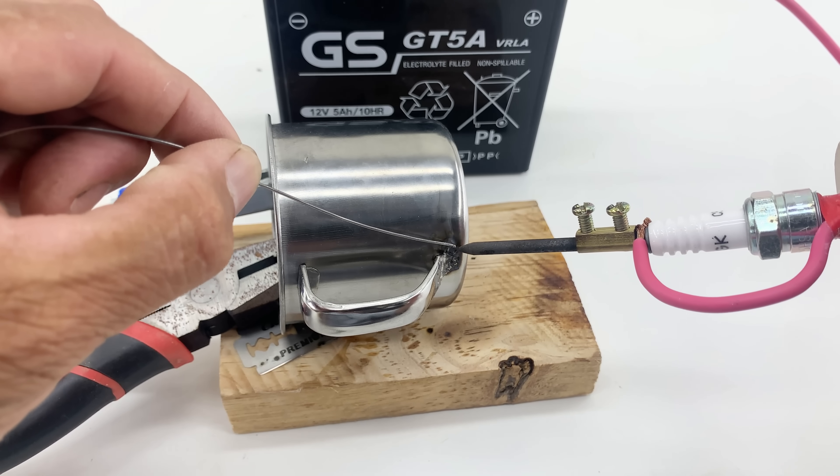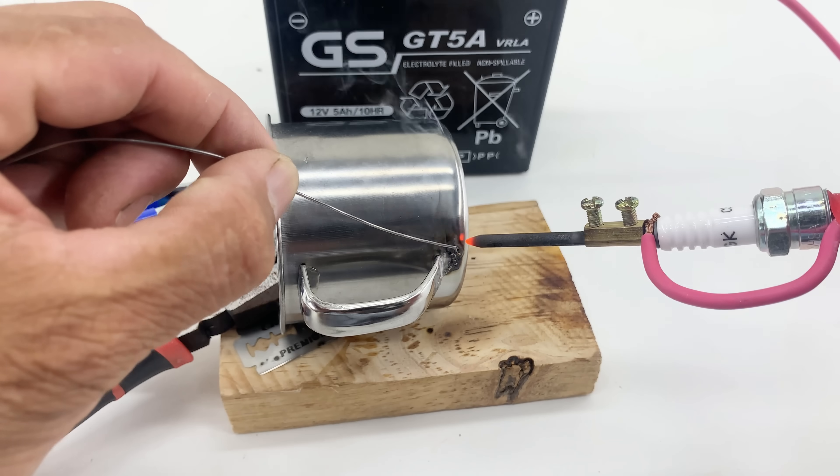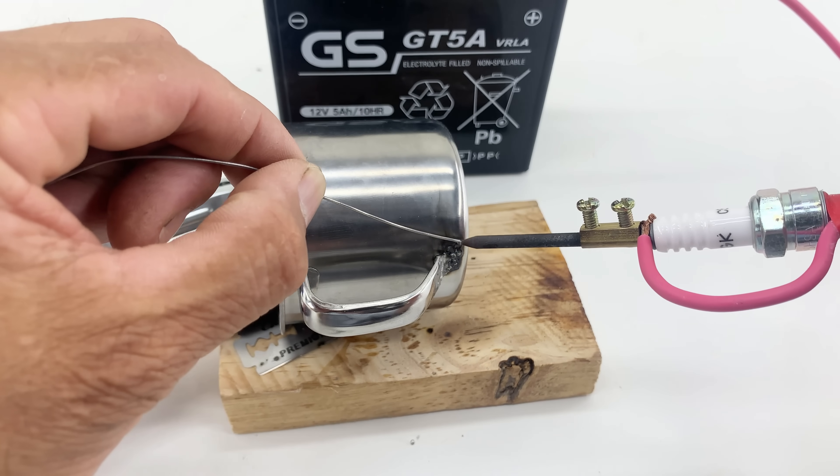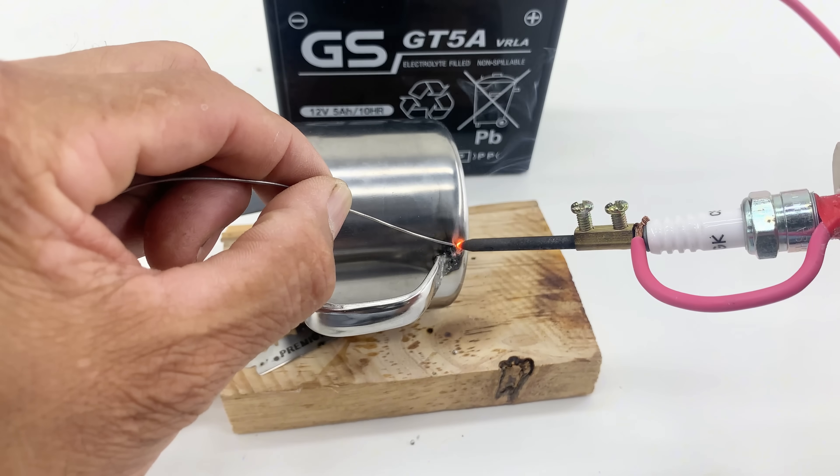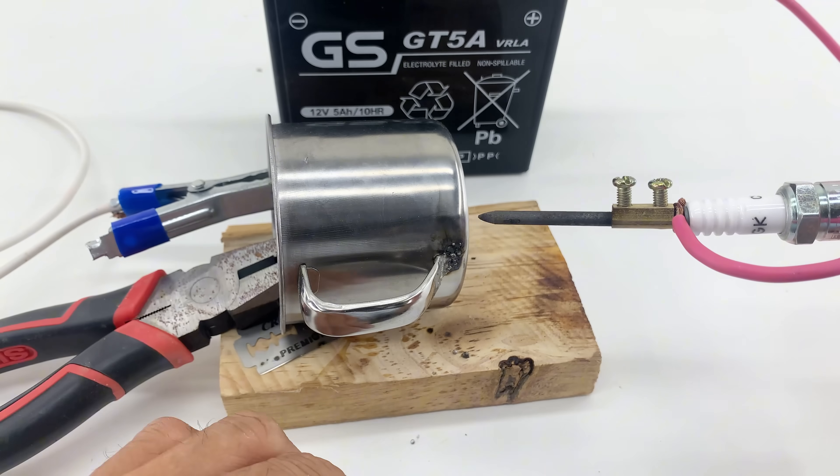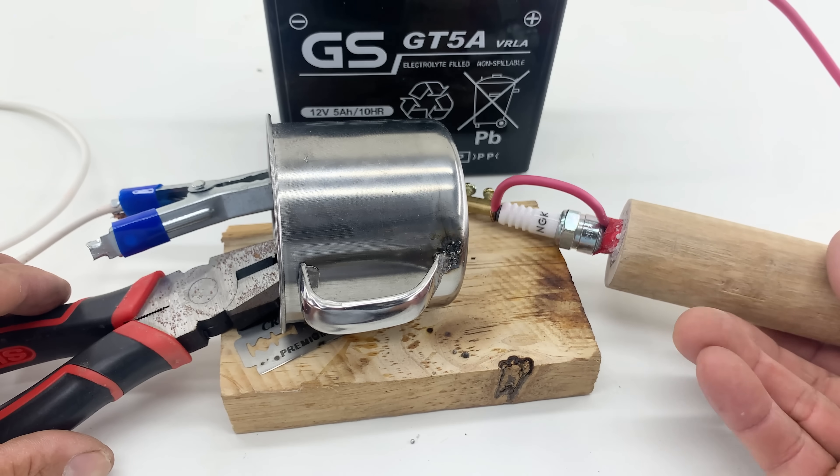See how the concentrated heat from our tool begins to melt the metal, allowing me to carefully create a hole? It's incredible to see a simple spark plug and a carbon rod transform into such an effective heating and cutting device. This DIY device proves that with a little creativity and some basic components, you can achieve amazing things.